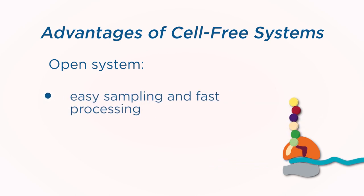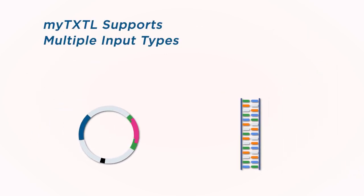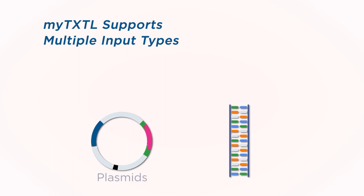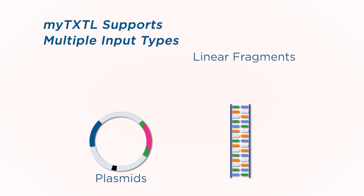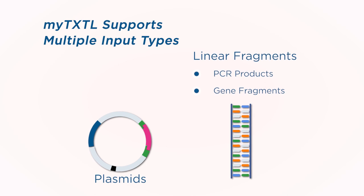Substrates or folding helpers can easily be added as needed. The open system makes sampling and processing easy. Cell-free TXTL supports both plasmids and linear DNA as drivers for expression, including PCR products and gene fragments.